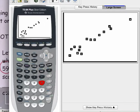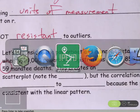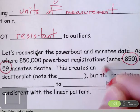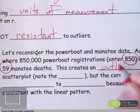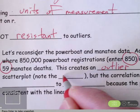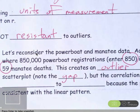So that point is consistent with the linear pattern. It is still considered though an outlier because it is away from the other data in the data set. So let's summarize that there. This creates an outlier in the scatter plot. Note the gap.